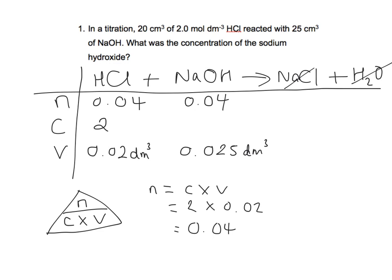Okay, so now we know the number of moles and we know the volume, we can work out concentration. Remember, concentration is the number of moles divided by volume, and I've used my formula triangle to help me with that. Therefore, 0.04 divided by 0.025. And the answer is 1.6 moles dm to the minus 3.